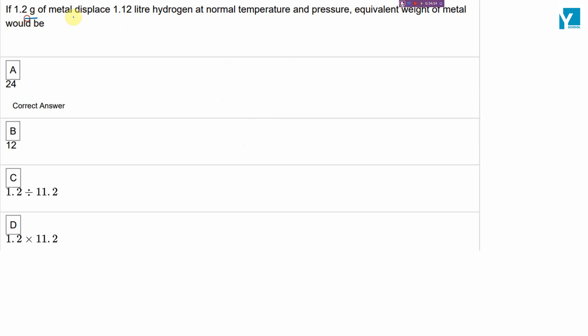Question is: 1.2 grams of a metal displace 1.12 liters of hydrogen at normal temperature and pressure, the equivalent weight of the metal is? Now you need to see the gram equivalent. As much as the metal reacts with hydrogen, the law of chemical equivalents will be equal to the gram equivalents of hydrogen.